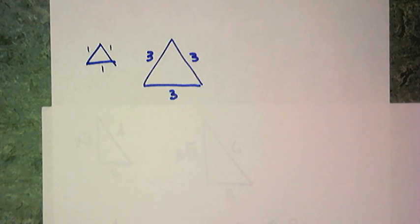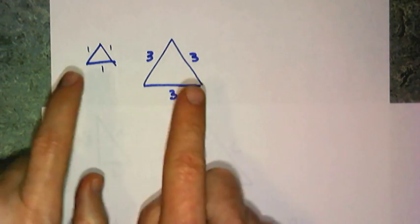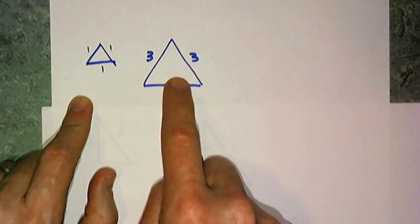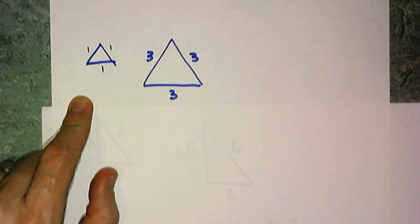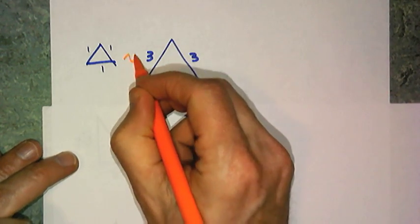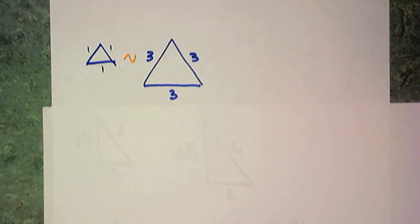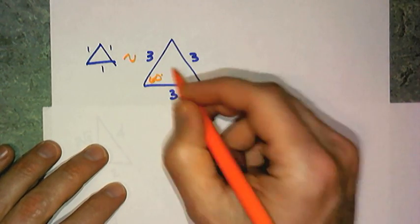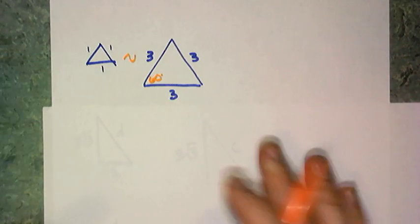Now let's specifically talk about similar triangles. I have two triangles here — this one has sides of length 1 and this one has sides of length 3. Are these two triangles similar? Of course they are, because both are equilateral triangles. Every equilateral triangle is the same shape, and we know that every angle is 60 degrees.